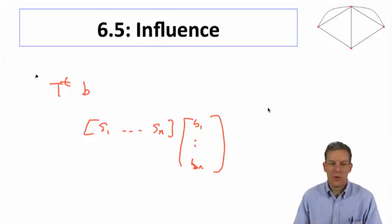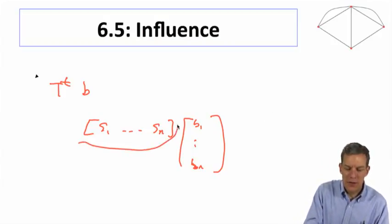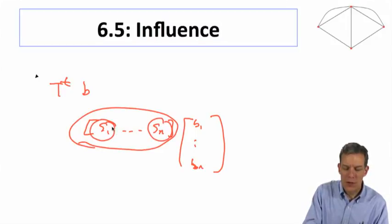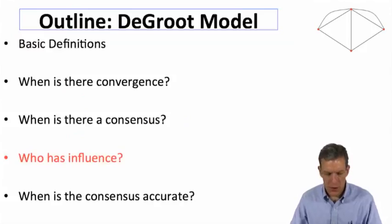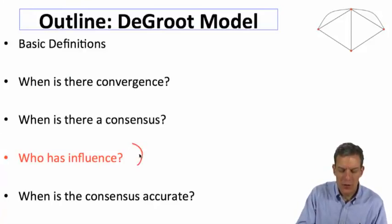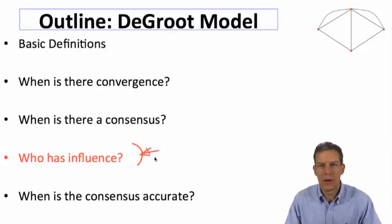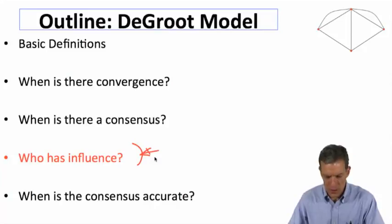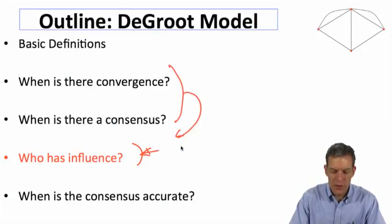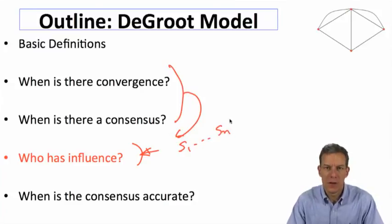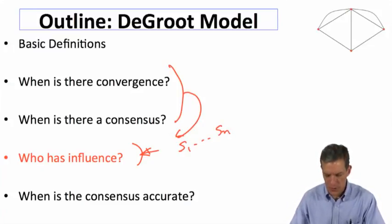This is essentially giving us a measure of the influence of each individual—how influential they are. Let's talk about that. We're trying to find out who has influence in this model, and this gave us some preview by telling us that s1 through sn was a unit left-hand side eigenvector of the matrix.